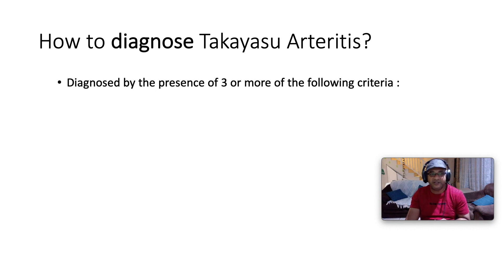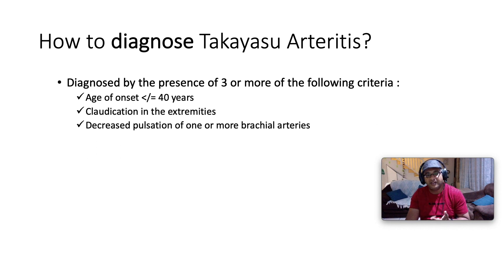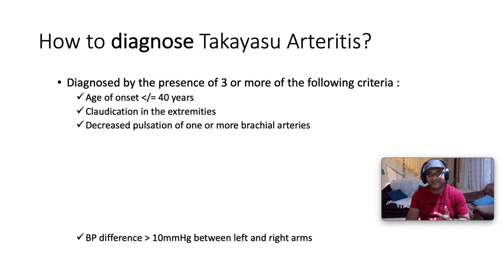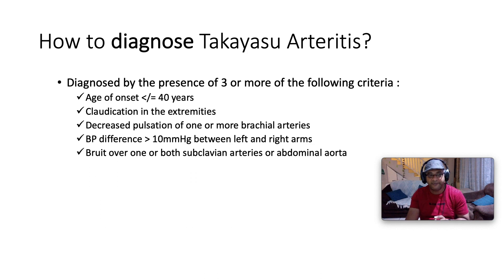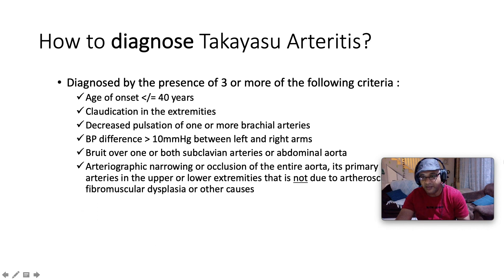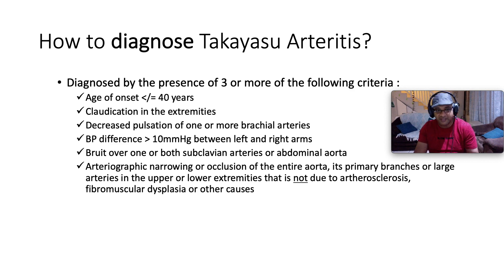Takayasu arthritis is diagnosed by the presence of three or more of the following criteria: age of onset less than or equal to 40 years; claudication in the extremities; diminished pulsation of one or more brachial arteries; blood pressure discrepancy between the left and right arms by more than 10 mmHg systolic; a bruit over one or both subclavian arteries or the abdominal aorta; and arteriographic narrowing or occlusion of the entire aorta, its primary branches, or large arteries in the upper or lower extremities not attributable to atherosclerosis, fibromuscular dysplasia, or any other cause.